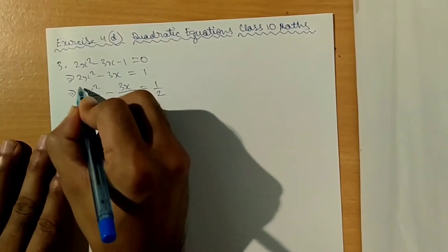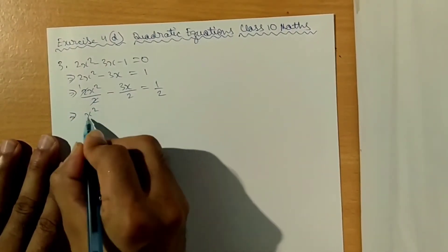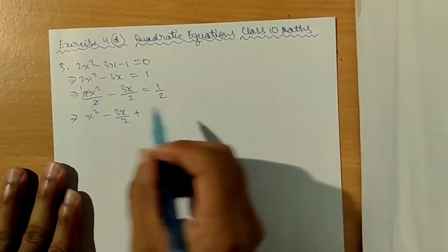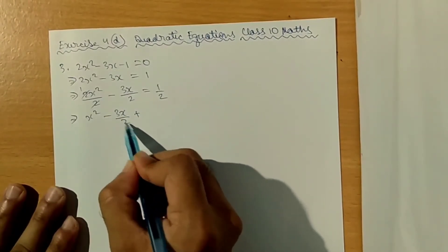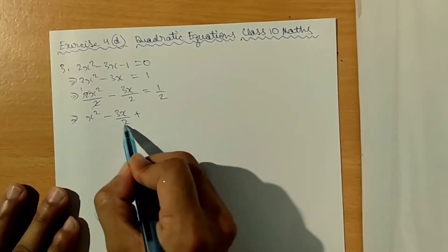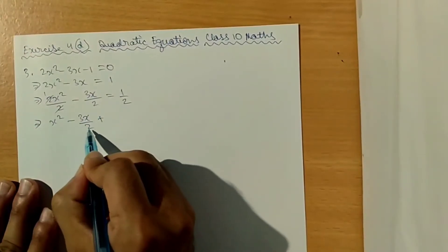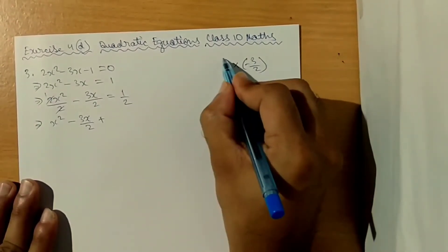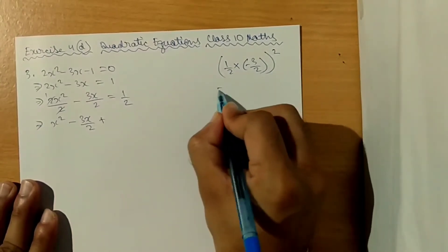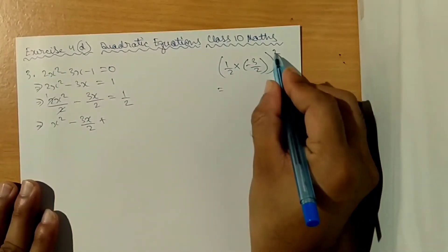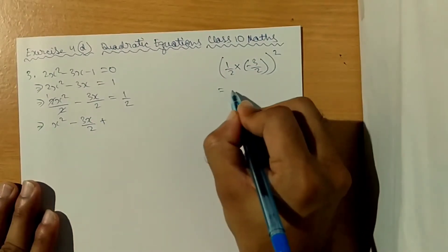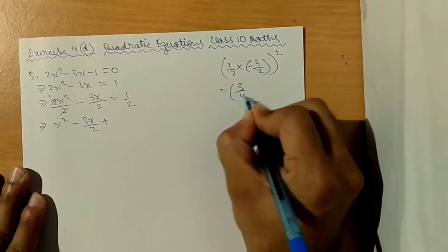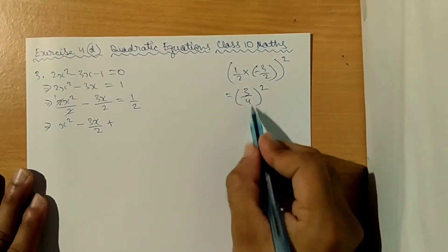This implies x squared minus 3x by 2. The coefficient of x is minus 3 by 2. We take half of the coefficient: half into minus 3 by 2. Then we square it, so 3 by 4 squared. Next line: minus 3 by 2, so 3 into 1 divided by 2 times 2, giving 3 by 4 squared.